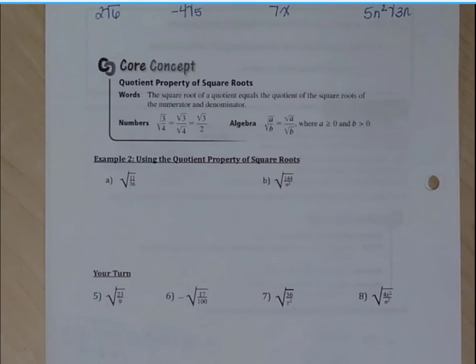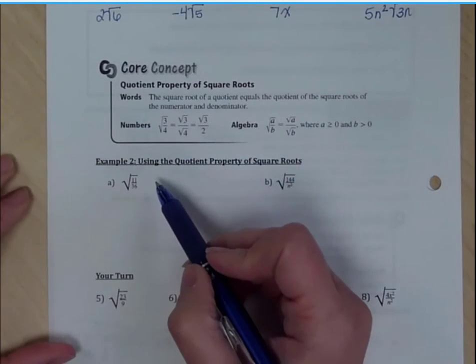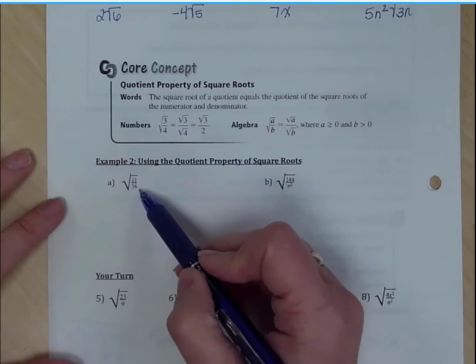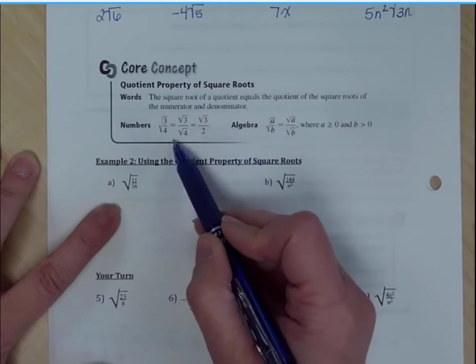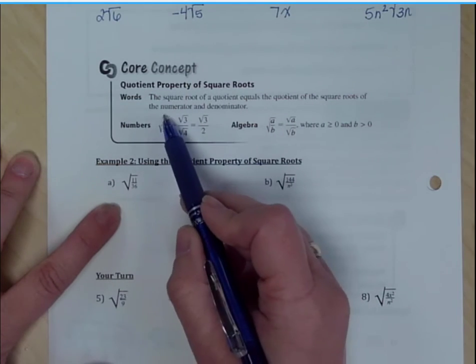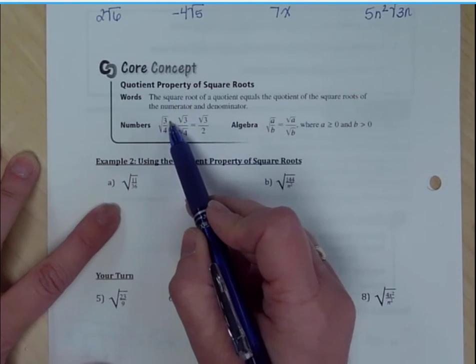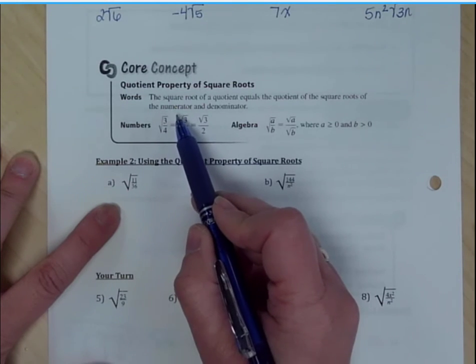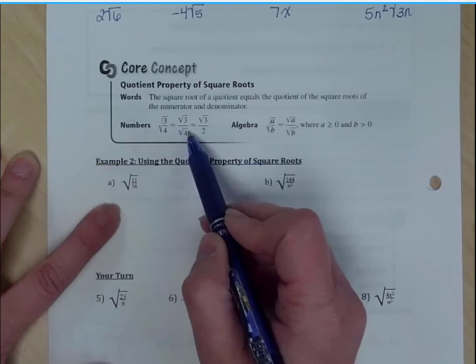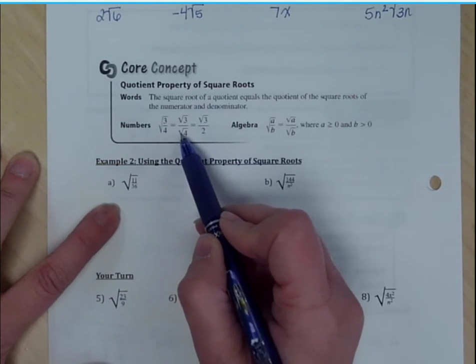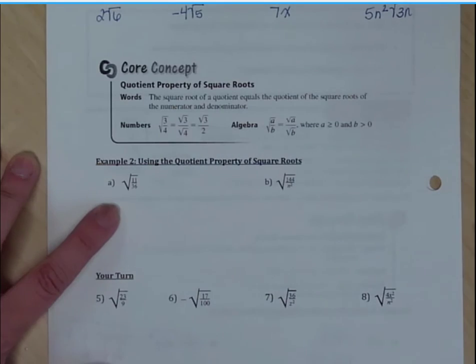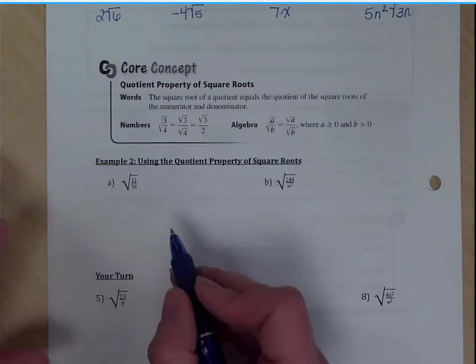Let's take a look at the quotient property of square roots. If you recall, we mentioned earlier that we can't have a fraction within a radical or a radical in our denominator. Here's why. Because if I have the square root of 3 4s, it's the same as the square root of 3 over the square root of 4. We cannot have a radical here in a denominator when we are simplifying our radicals.